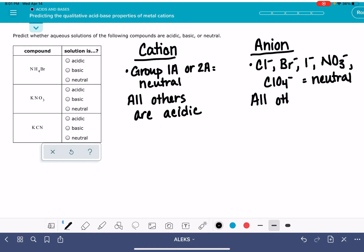And all other anions are basic. So when we're trying to decide if a compound is acidic or basic or neutral, we want to classify the cation and then also classify the anion and just kind of think about how they work together.